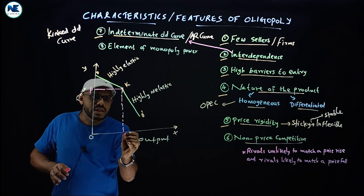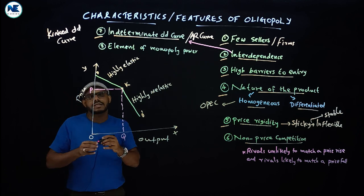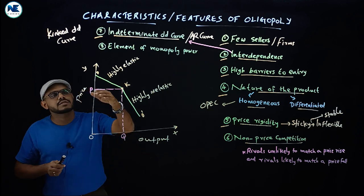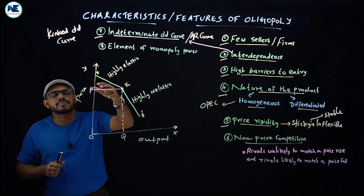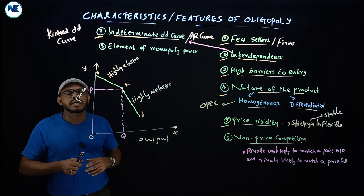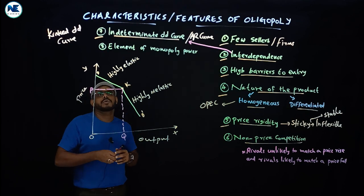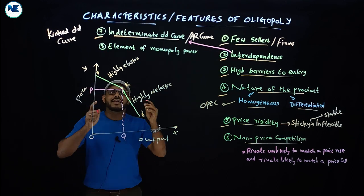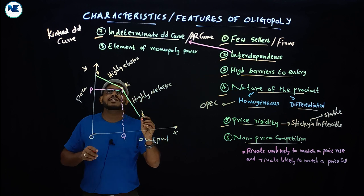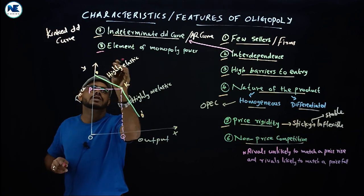Please understand these points. P is the price decided at the kink of the demand curve, and Q is the corresponding output. We will discuss the shape of the marginal revenue curve and everything in the coming video.